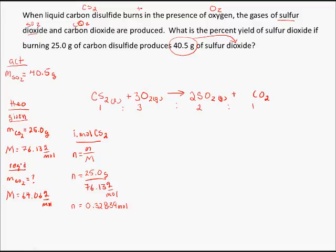So in the next operation, I'm going to compare the amount of CS2 that's consumed to the amount of SO2 that should be produced. So it's a one to two ratio. Two SO2s should be generated for every one mole of CS2 that's consumed.